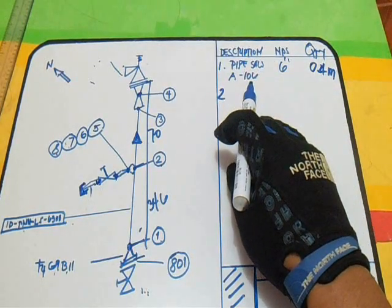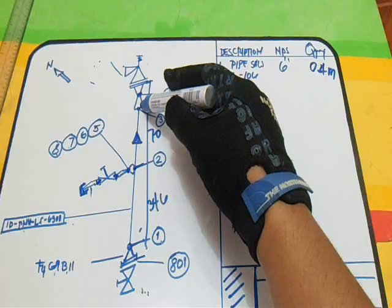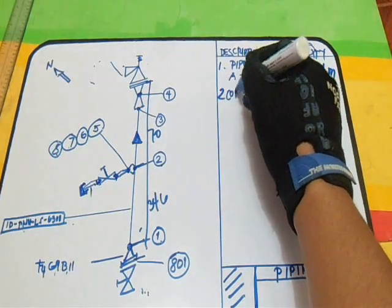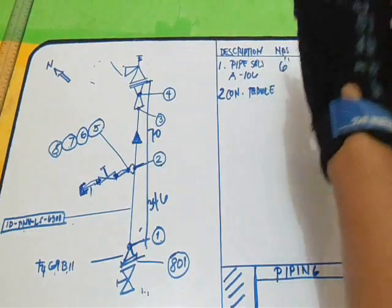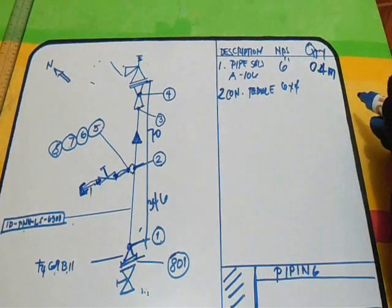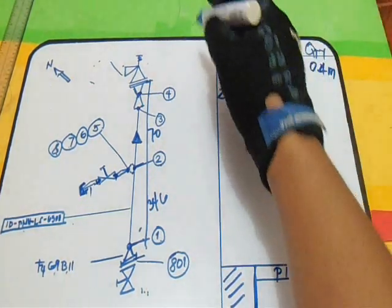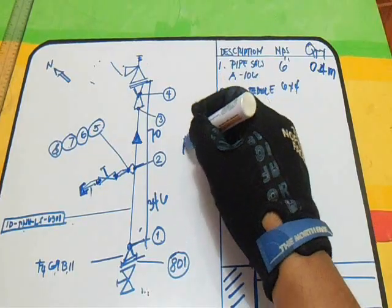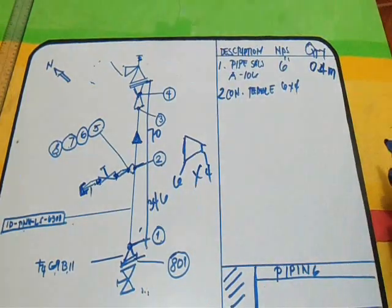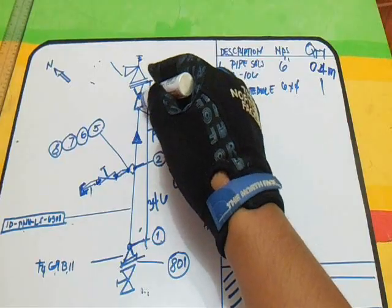Next, we have a reducer, concentric reducer. So where is the concentric reducer? This is our concentric reducer. For the concentric reducer, just write it down here, CON reducer. Also the size, for example, 6 by 4. So our main line is 6, going here. This is the concentric reducer. This size is 6, and here 4 inch. So for the quantity, only 1, because our concentric reducer is only 1.